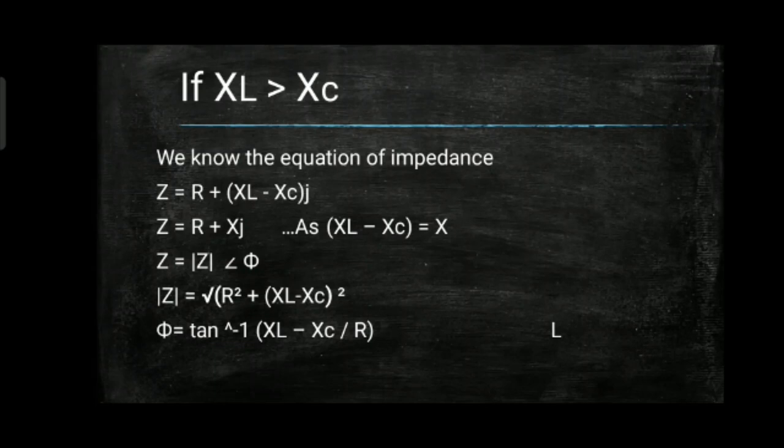First condition: inductive reactance is greater than capacitive reactance. We know the equation of impedance: Z = R + (XL − XC)j, so X = XL − XC. Therefore, |Z| = √(R² + (XL − XC)²), and the phase angle φ = tan⁻¹((XL − XC) / R).